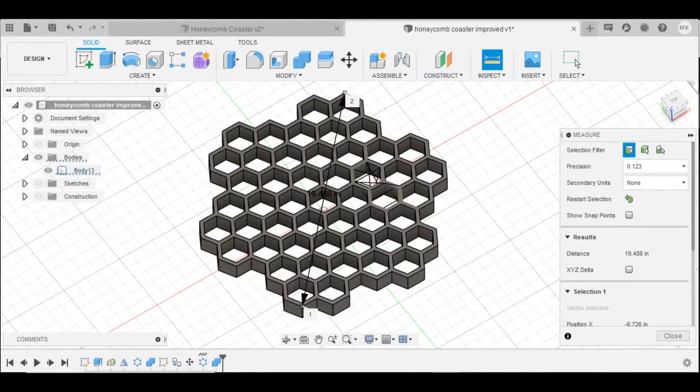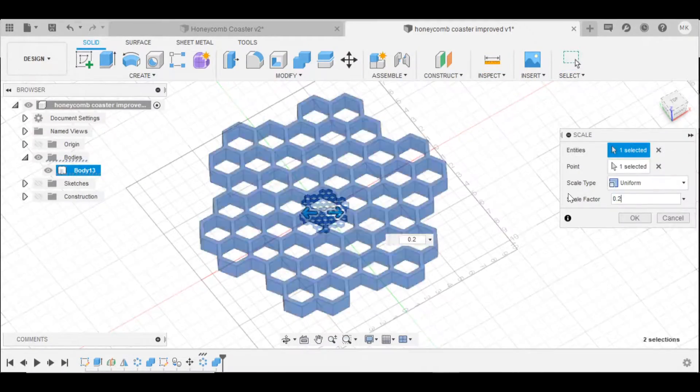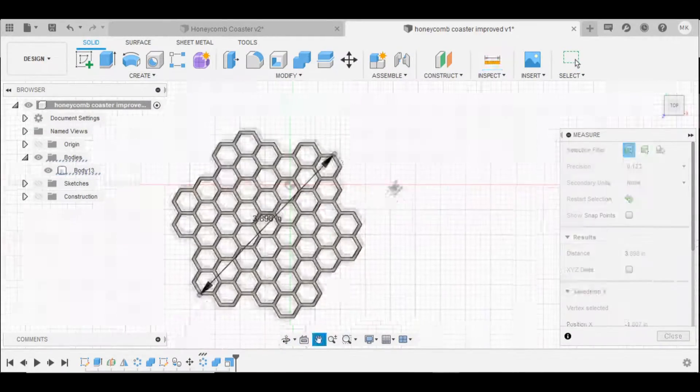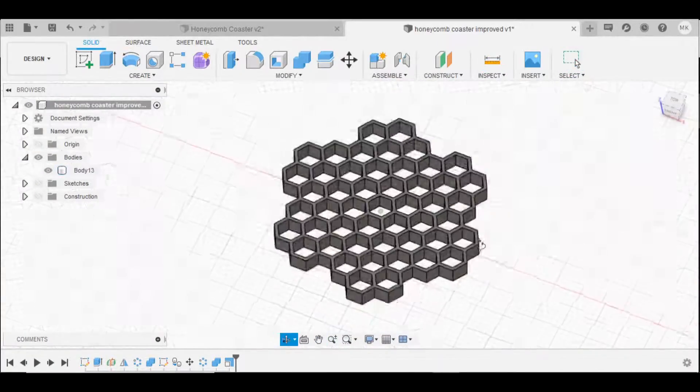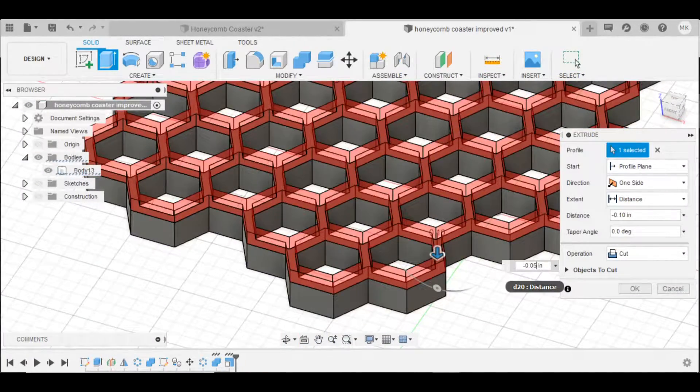Once I had the full shape I scaled the coaster to its final size and made sure that the honeycomb walls were thick enough to be 3D printed. I also set the coaster thickness to a quarter of an inch.